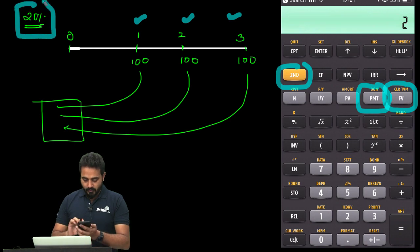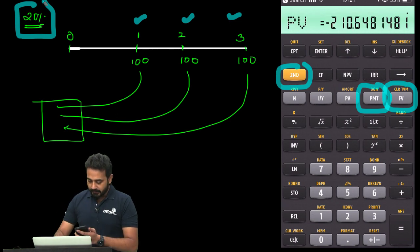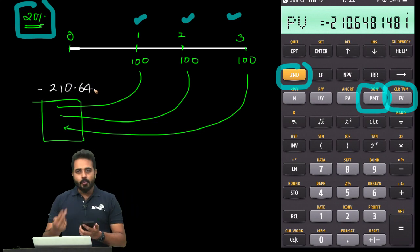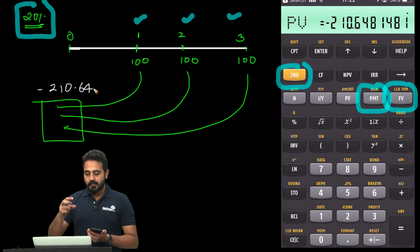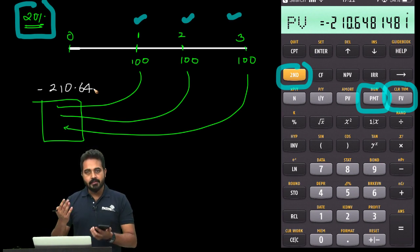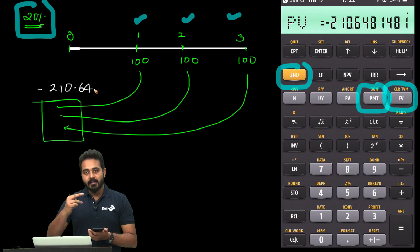Then press Compute and Present Value. The answer will be $210.64. It will show a negative sign, and that's because we entered payment as positive. The simple rule is the signs are opposite: payment positive means PV negative. Had we entered payment as negative, PV would have been positive.